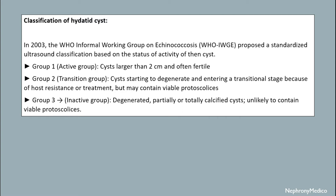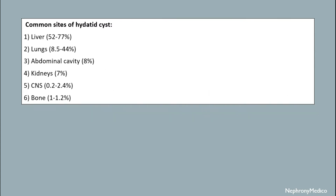Group 2 includes cysts entering a transitional stage because of host resistance or treatment, but may contain viable protoscolices. Group 3 includes degenerated, partially or totally calcified cysts, unlikely to contain viable protoscolices.